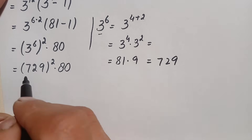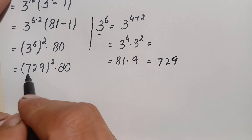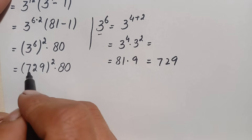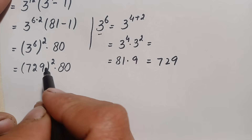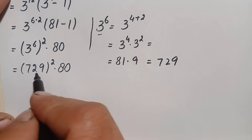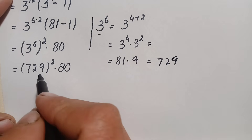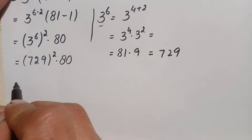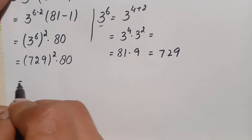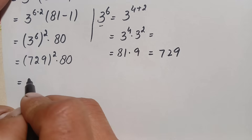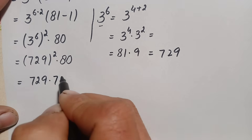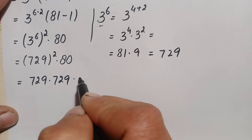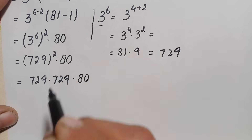Now we can find the value of 729 squared times 80. We could use the algebraic identity (a+b)^2 with 729 written as 700 plus 29, but instead we will write 729 squared as 729 times 729, then multiply the result by 80.